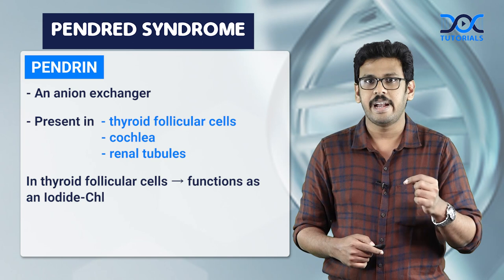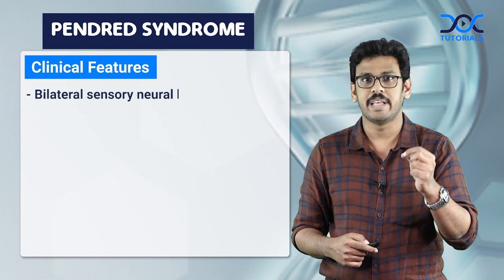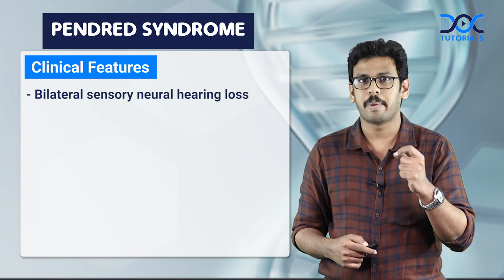The most common clinical feature in Pendred syndrome — often confused by students — is bilateral sensorineural hearing loss. It is not hypothyroidism or goiter. This hearing loss is present from the period of birth onwards.